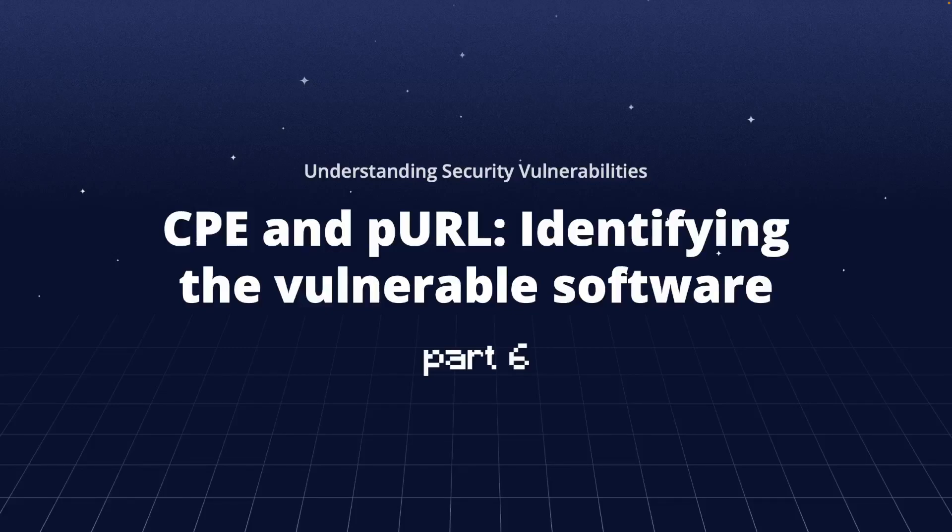Being able to uniquely identify the application or software that is vulnerable is crucial. This will help us understand that we are using the vulnerable software and that we need to consider patching or in another way remediate the vulnerability. Here, in part 6, we will discuss two common ways of identifying software or applications.